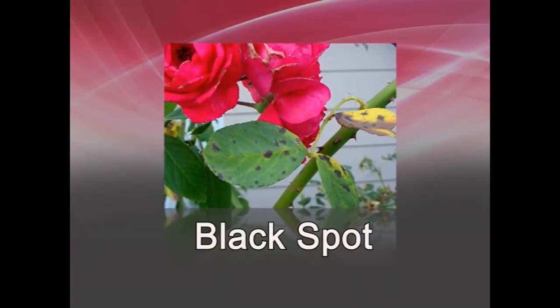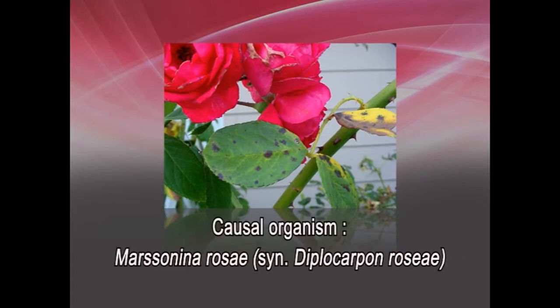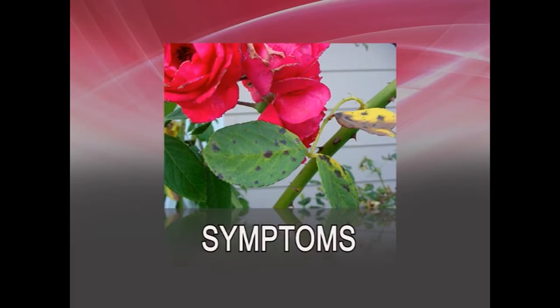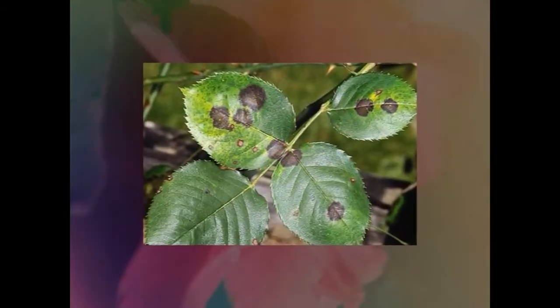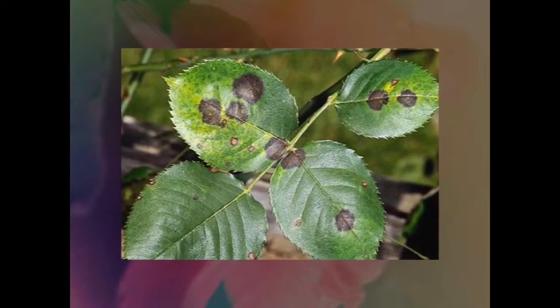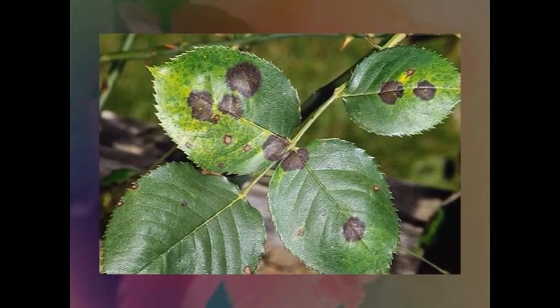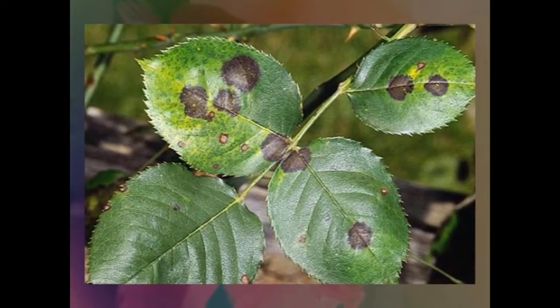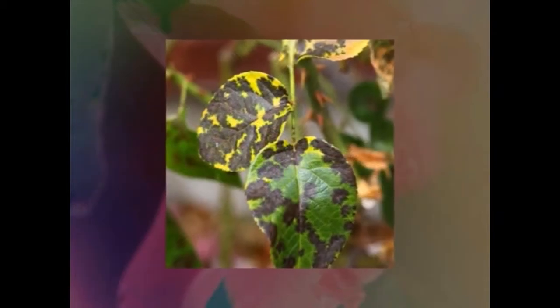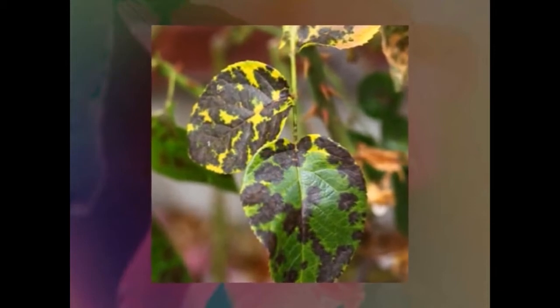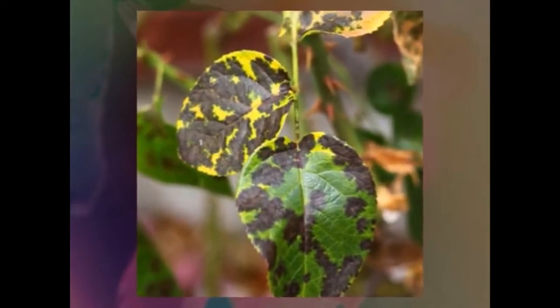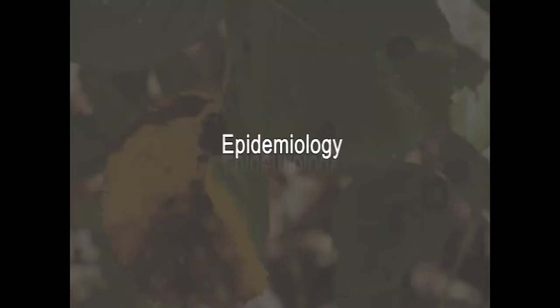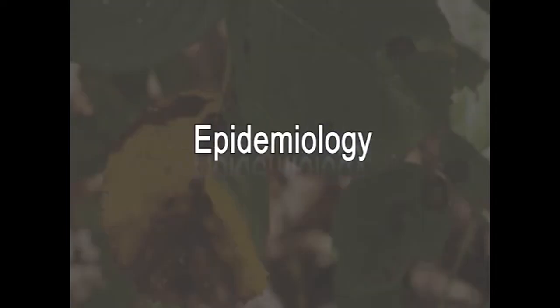The next disease is black spot, caused by Marssonina rosae. The characteristic symptom is the appearance of leaf spots which are black, circular or irregular, with black margins and yellow halos. Warm, wet weather favors the spread of the pathogen.